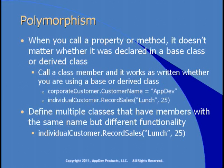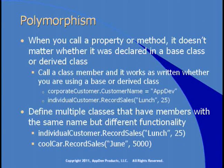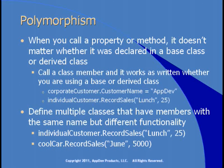For example, we're calling the recordSales method on an individual customer class, passing what was bought and how much it cost. We also have a car class with a recordSales method — but its first parameter is the month and the second is units sold. So two members with the same name do different things based on the class they're defined in. Polymorphism says that's okay because we're calling the recordSales method of a specific class.